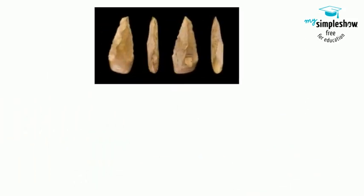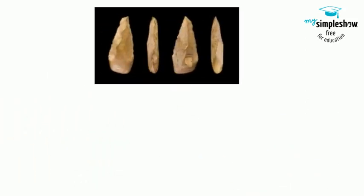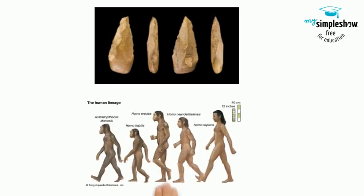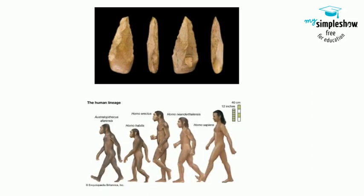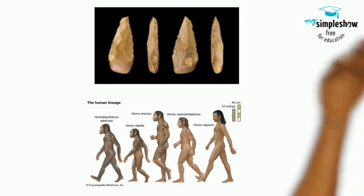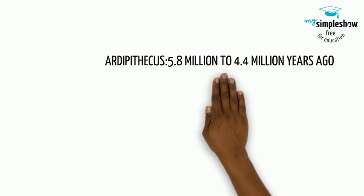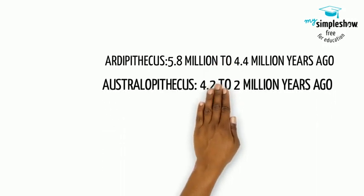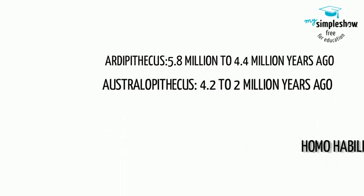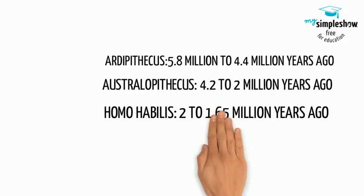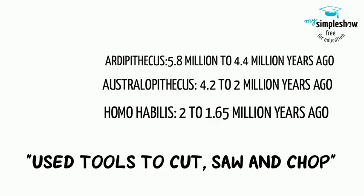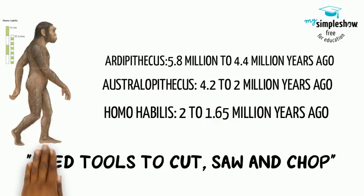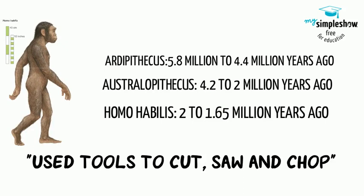Since the Leakeys, scientists have discovered numerous fossil records of early hominid groups. They have classified them into groups based on the level of advancement in toolmaking and in reasoning. They have been classified into Ardipithecus, which included Ardi; Australopithecines, which included Lucy; and Homo habilis, which existed two million years ago and used stone tools for cutting, sawing, and chopping.